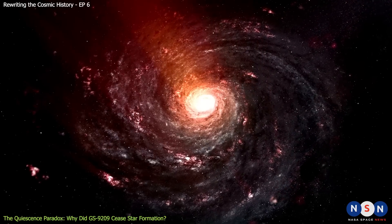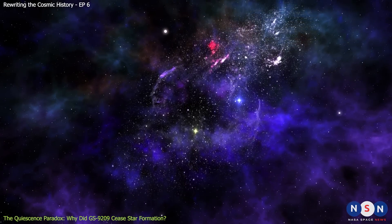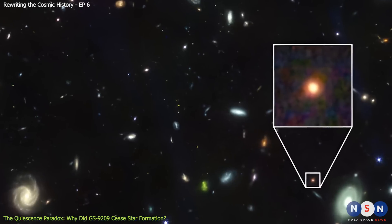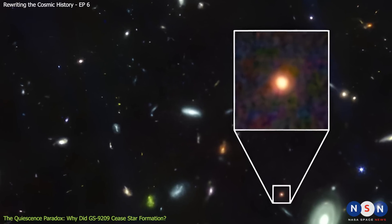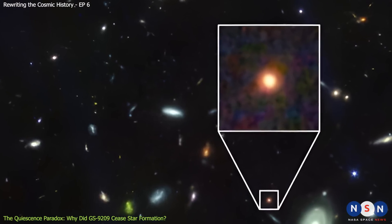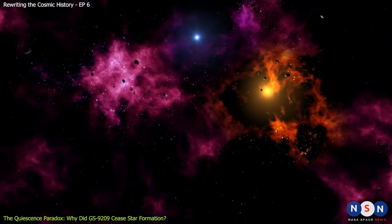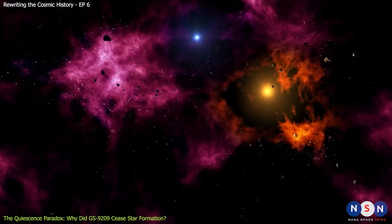Quiescent galaxies are usually found in the later stages of cosmic evolution, when galaxies have used up most of their gas or have lost it due to various processes. But GS 9209 is the earliest known example of a quiescent galaxy, which is very surprising and puzzling. How did GS 9209 become quiescent so early in the universe's history? And what caused it to stop forming stars so abruptly?